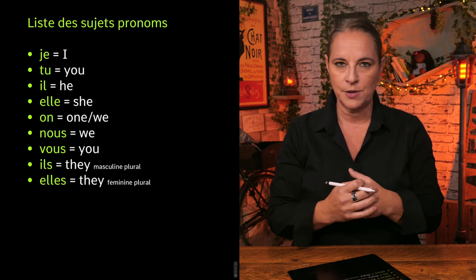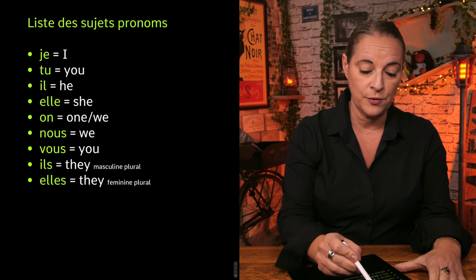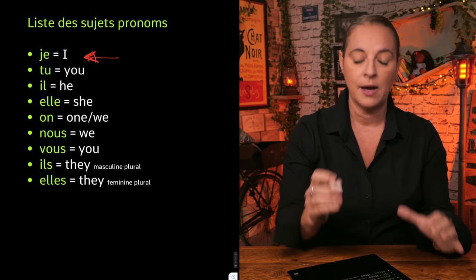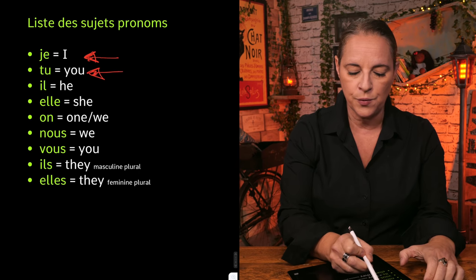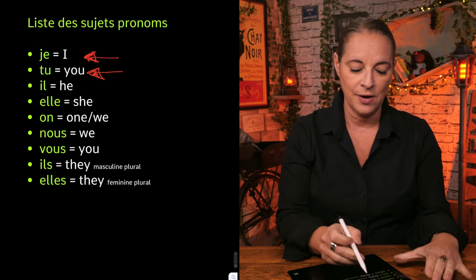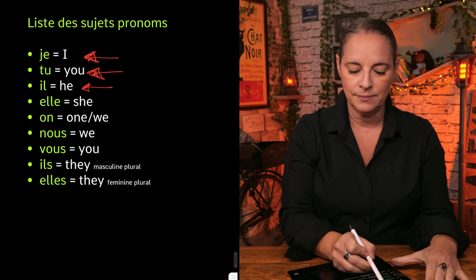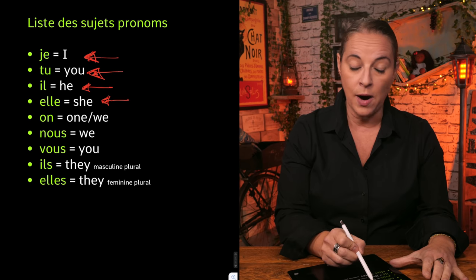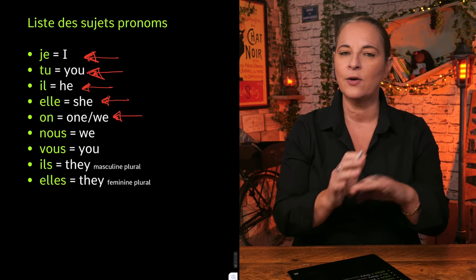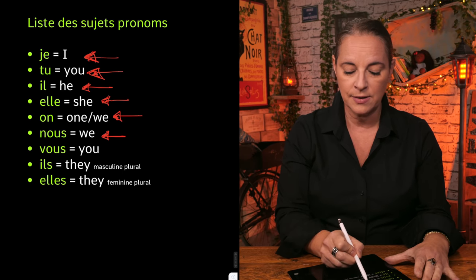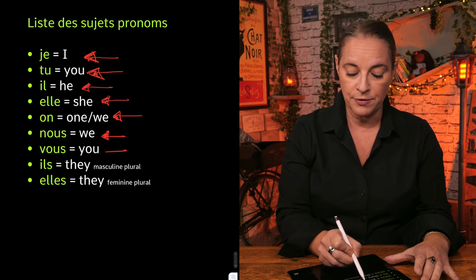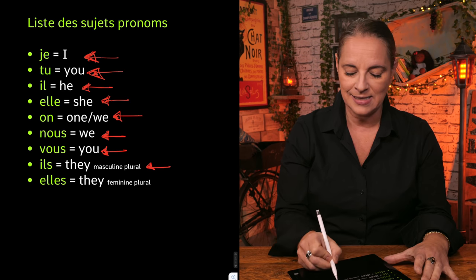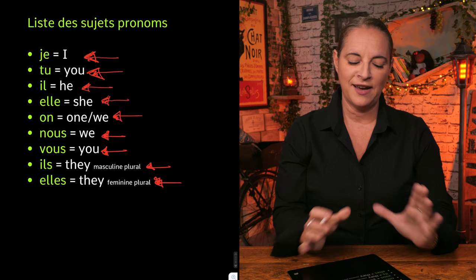Now let's have a look at the list of those subject pronouns — la liste des sujets pronoms, c'est ça. Je is I. Tu is you. Il is he. Elle is she. On is one, but it means we as well. Nous represents we. Vous represents you again. Ils is they and elles is they. So let's have a look at them in detail.